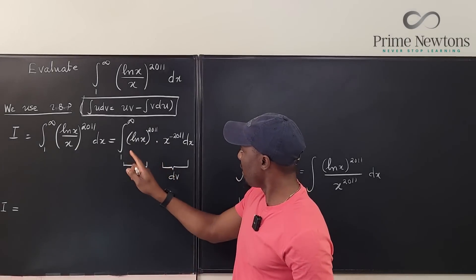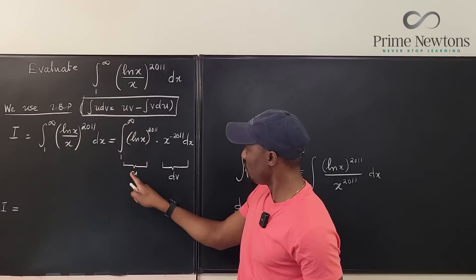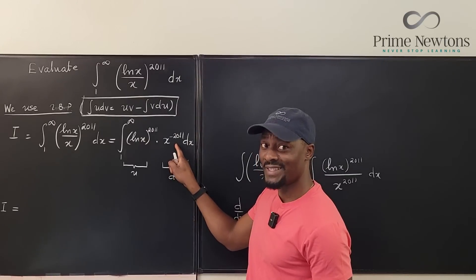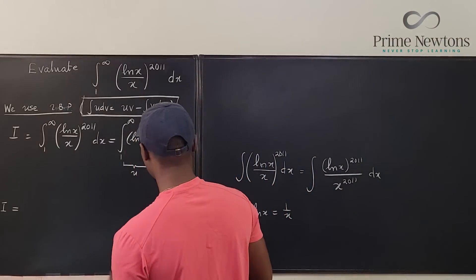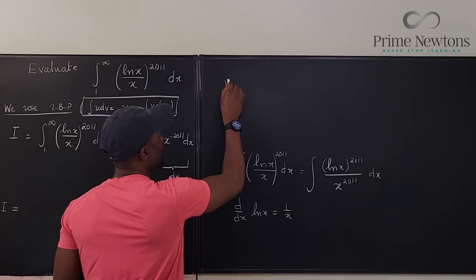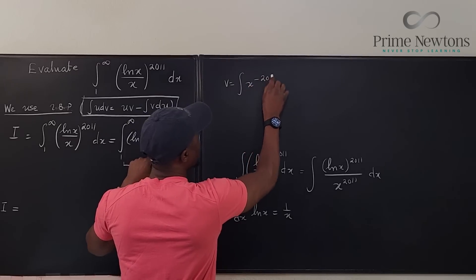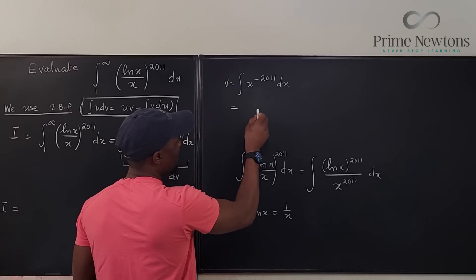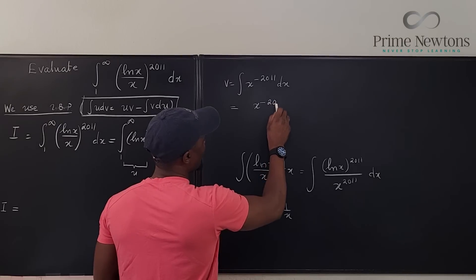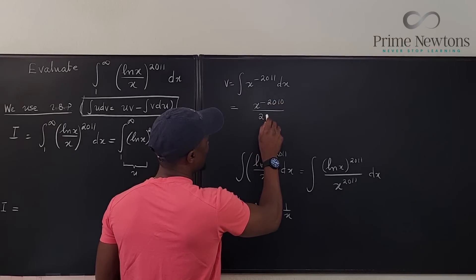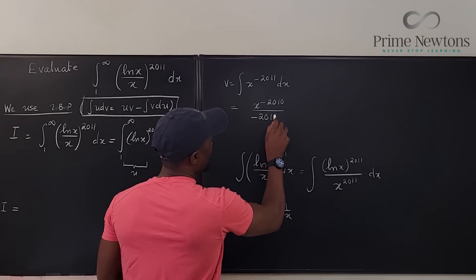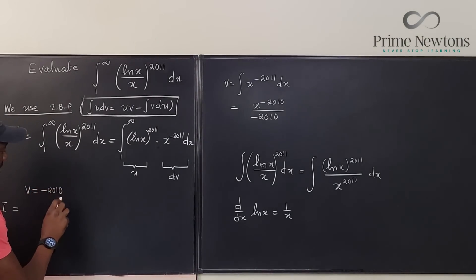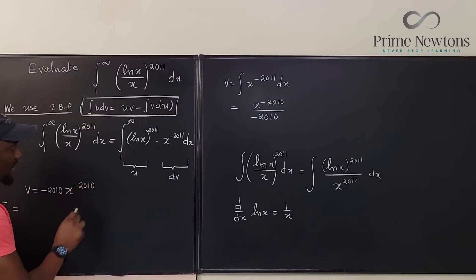I already know what u is, but I need to find v, which is going to be the integral of dv. We know how to integrate x^(-2011) dx. So v is the integral of x^(-2011) dx, and we add 1 to the exponent and divide: that gives x^(-2010) over negative 2010, which simplifies to v = -1/(2010 · x^2010).